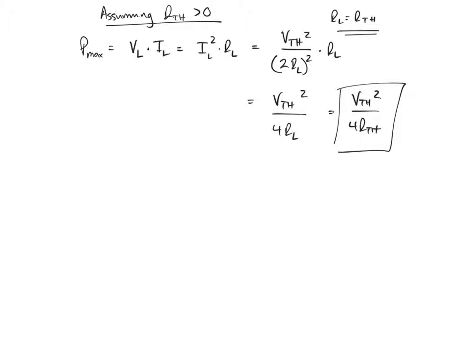This is an equation you can remember. If you don't remember, don't worry, because you know that power is just VI and you can work it out. The important thing is that you know that maximum power occurs when the load resistance equals the Thevenin equivalent resistance.